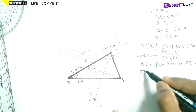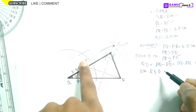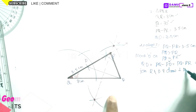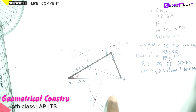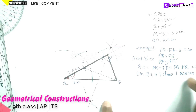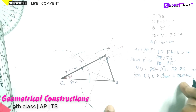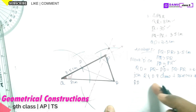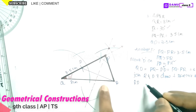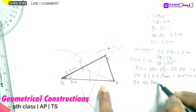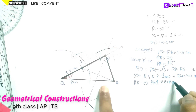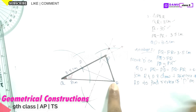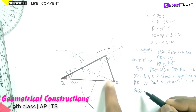Join R and D, then draw the perpendicular bisector of RD. This perpendicular bisector is used to find vertex P on QD produced.